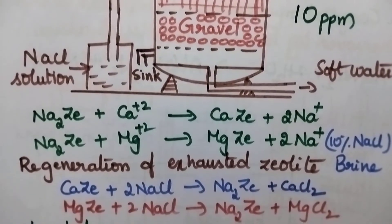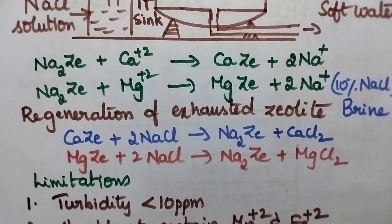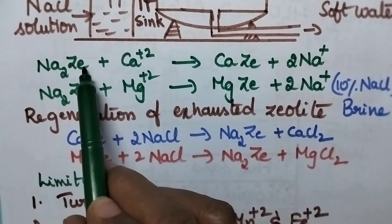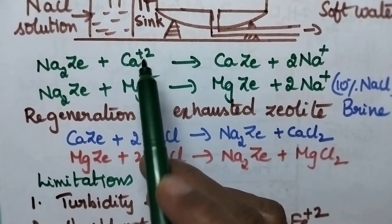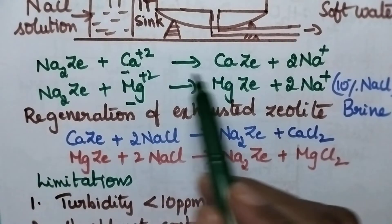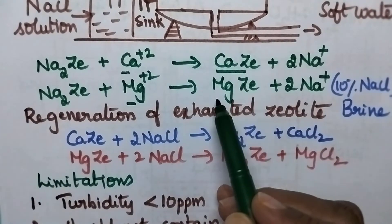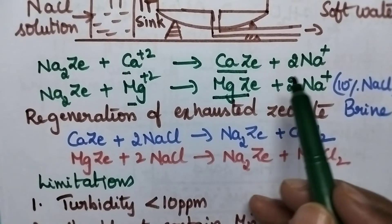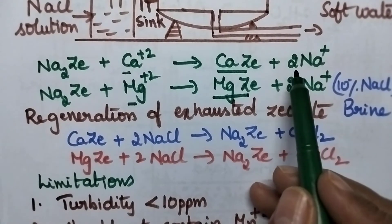So coming to the reactions taking place in the zeolite process, whenever hard water is passed through the zeolite bed the calcium and magnesium ions are being replaced by the sodium ions. That means it results in the formation of calcium zeolite and magnesium zeolite along with the formation of sodium salts.